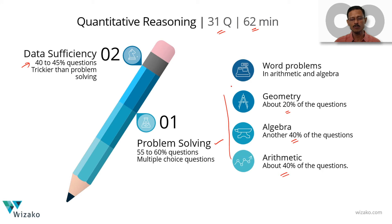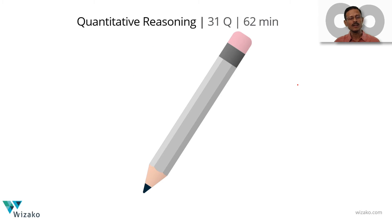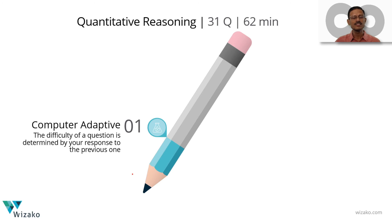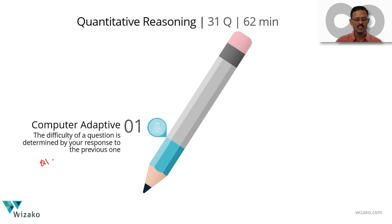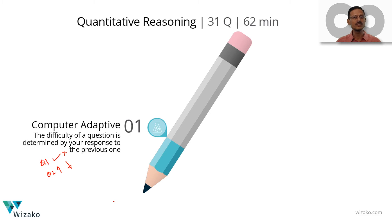A key feature of the quant section is computer adaptiveness. The difficulty of the next question shown to you is determined by whether you answered the current question correctly. If you answer question one correctly, the difficulty of question two is likely to go up. If you answer incorrectly, the difficulty is likely to go down. Essentially, the difficulty level of each question is determined by your answer to the previous one.